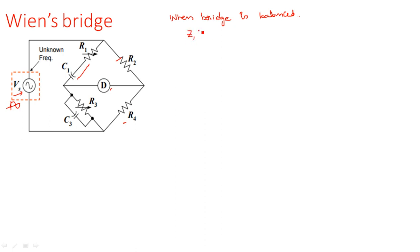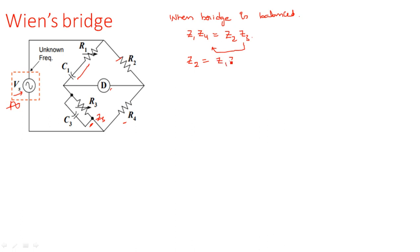During the bridge balanced condition, the balance equation is Z1·Z4 = Z2·Z3, where opposite arm impedances are multiplied and equated. Since the third arm has a parallel RC combination, Z3 should be replaced by Y3 (admittance). Rearranging: Z2 = Z1·Z4·Y3 — call this Equation 1. Now we identify each component value from the circuit.